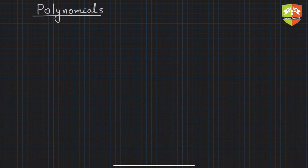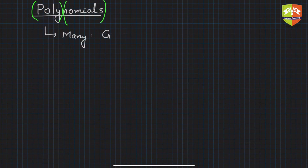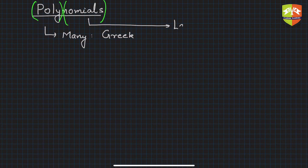Before we begin, we need to understand what the name 'polynomial' means. The word polynomial is made up of two words of different origin. The first part is 'poly' and the other is 'nomial.' 'Poly,' as many of you know, means 'many' and is of Greek origin. 'Nomial' is a Latin-origin word and it means 'name.'